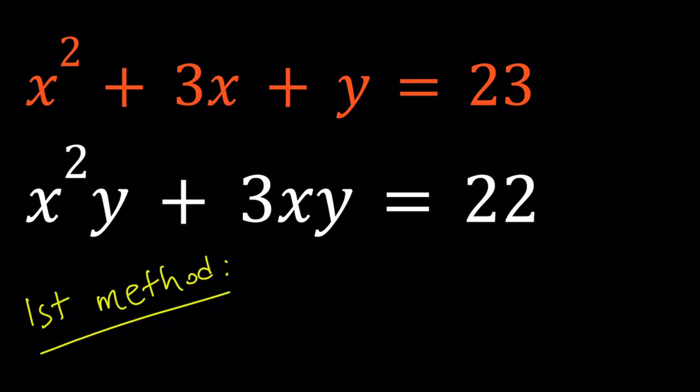First of all, if you look at the first equation, you hopefully easily see that we can isolate y. So let's subtract x squared plus 3x from both sides. That will give us y equals 23 minus x squared minus 3x. You could also write the x squared first, but it doesn't matter.